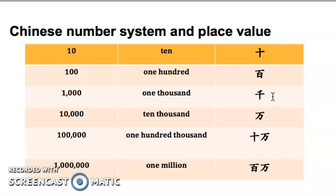And then qian times 10 is 10,000. So it will be wan. And then after that, wan times 10 again. So it will be shi wan - 100,000. And after that, wan times 10 again. And it's bai wan - 1,000,000.